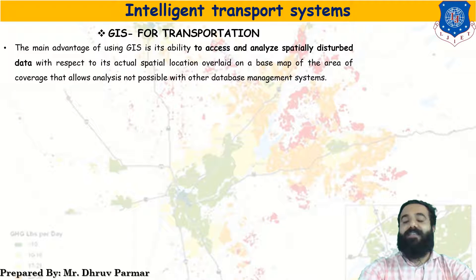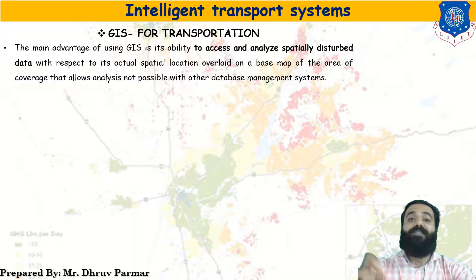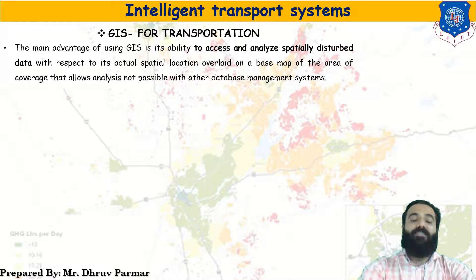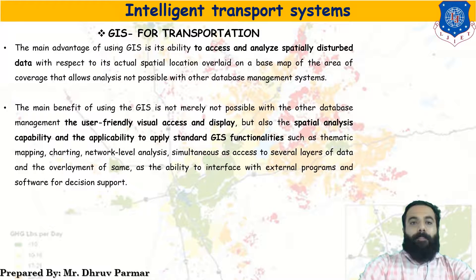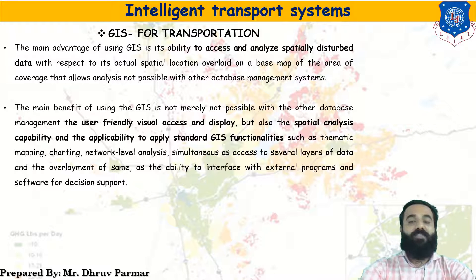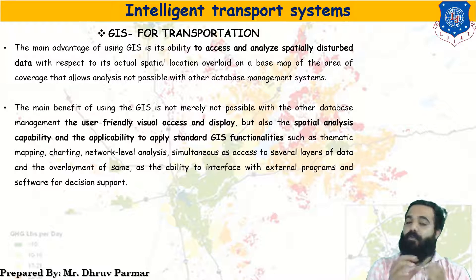The main advantage of using GIS is the ability to access and analyze spatially distributed data with respect to the actual spatial location overlaid on a base map of the area. This coverage allows analysis not possible with other data management systems. The main benefit of GIS is not only user-friendly visual access and display, but also spatial analysis capability and the ability to apply standard GIS functionalities such as systematic mapping.